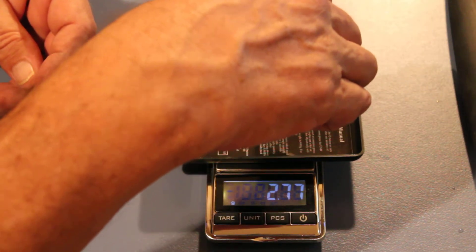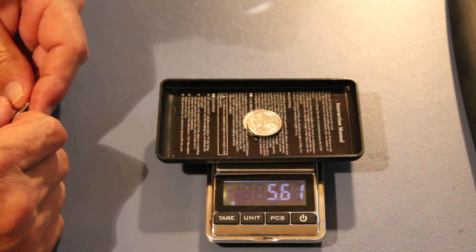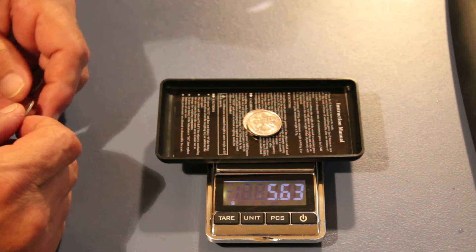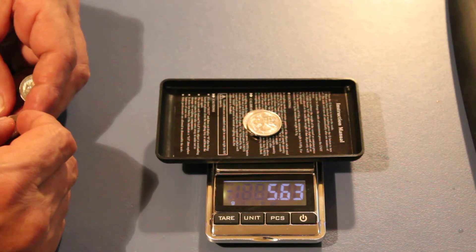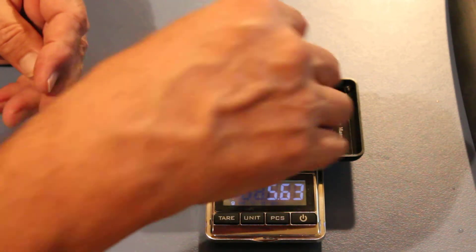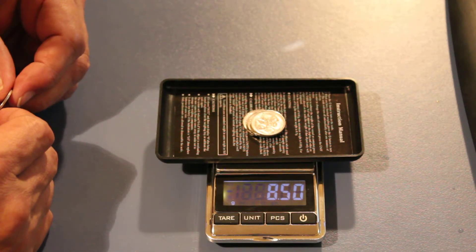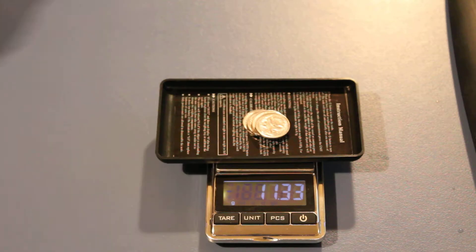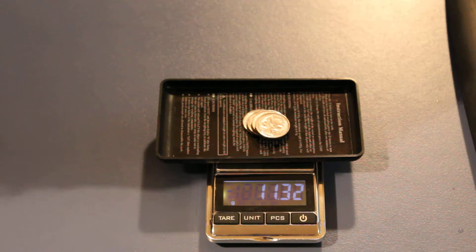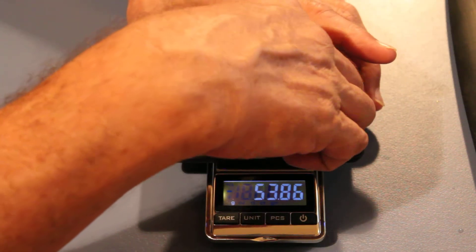Two should be 5.6. There you go, so that's 0.05 heavier than the other coin. 8.4 for three. That's close enough for me. Four coins, 11.2 should be the measure, and 11.3. So I'm pretty happy with that myself.